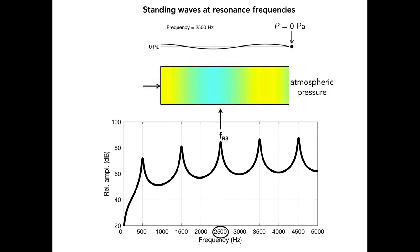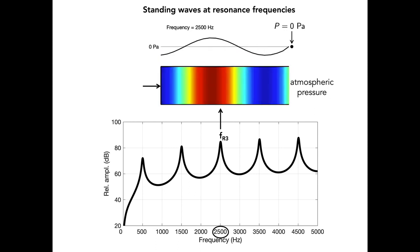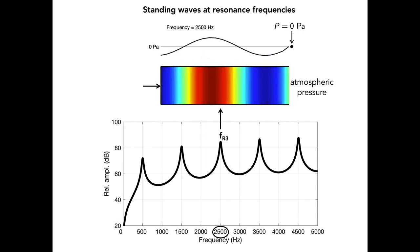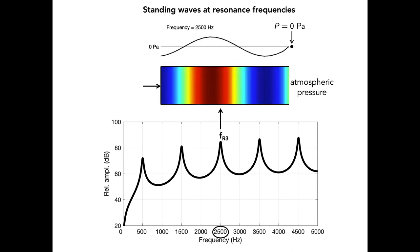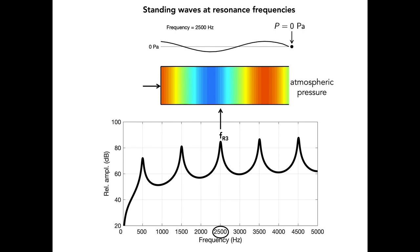In this case, a sinusoidal wave with a frequency matched to the third resonance of the uniform tube is injected at the closed end, producing a standing wave with three zero-pressure nodes. The pattern of pressure is different than the two previous animations, but again the boundary conditions at the closed and open ends of the tube are met.